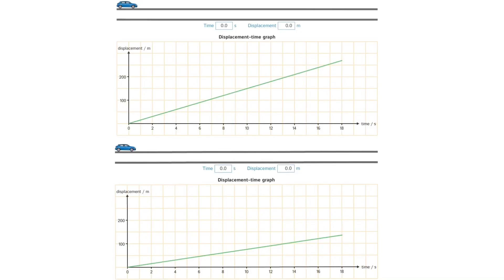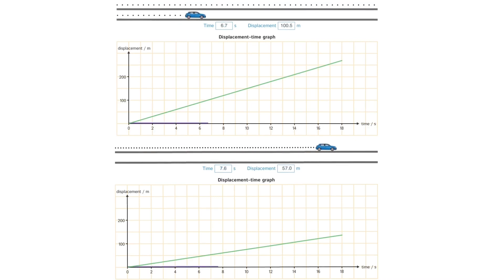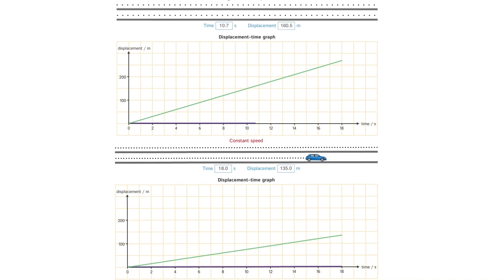Let's consider these two drafts. You can see that these two displacement-time graphs are showing the motion of two different cars. Can you see the difference? The upper car moves faster and the lower car moves slower.